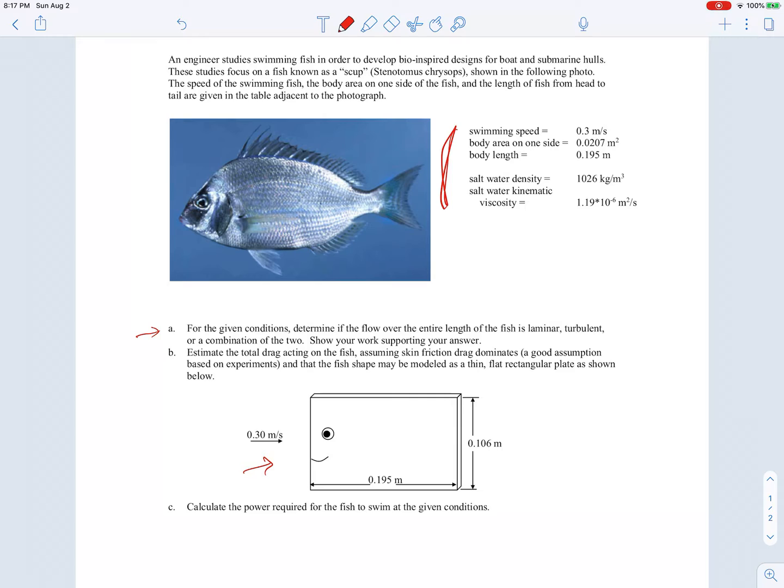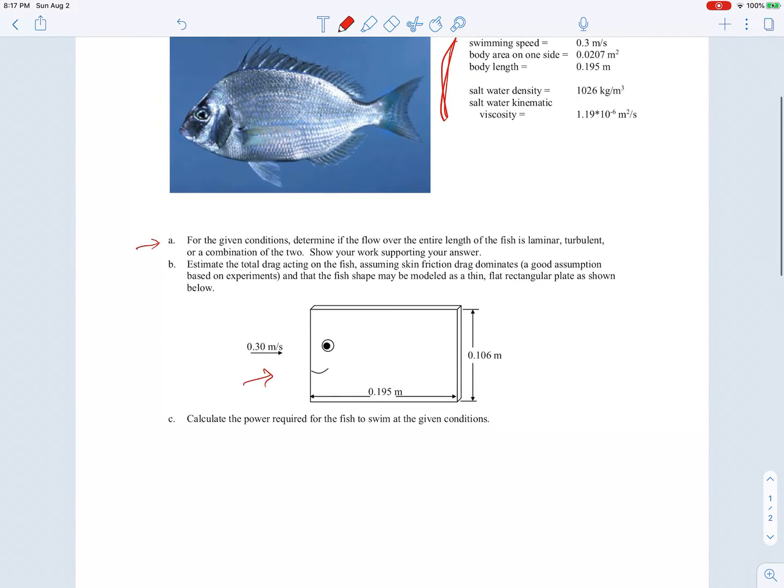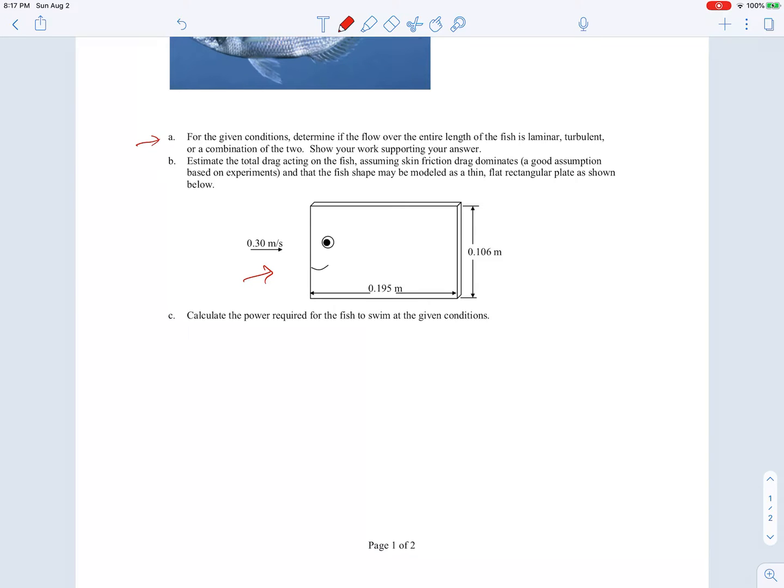Let's first address part A and determine if the flow over the length of the fish is laminar, turbulent, or a combination of the two. For that, we're actually going to calculate a Reynolds number based on the fish's length.